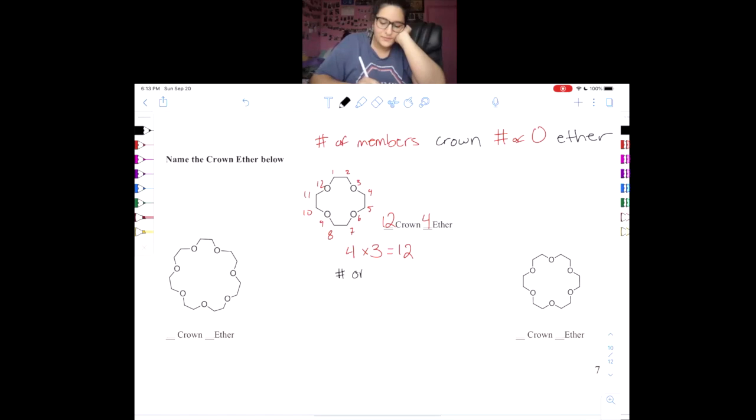So a really easy way to simplify this is the number of oxygens times three will give you the number of members. Let's try this out on the next one. So we have one, two, three, four, five, six, seven oxygens. Seven times three equals twenty-one.